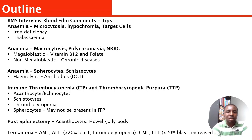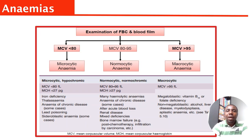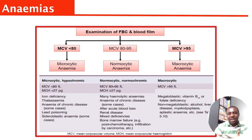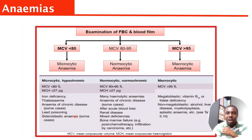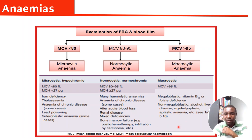Let us get into the main content. In anemias, you classify with MCV. When the MCV is low, these are the conditions you are likely to see — memorize that. When MCV is normal and the hemoglobin is low, these are the kinds of things you are likely to see. Then when it is raised, these are the kinds of conditions you are likely to see. Memorize it.